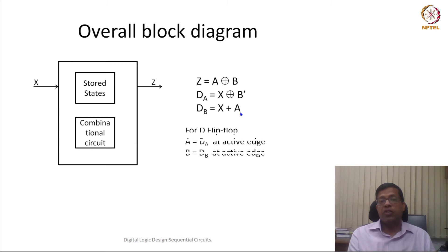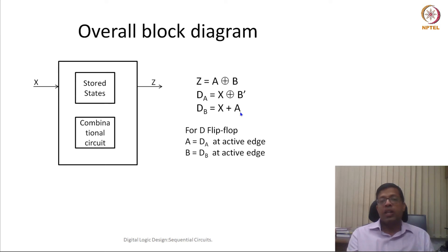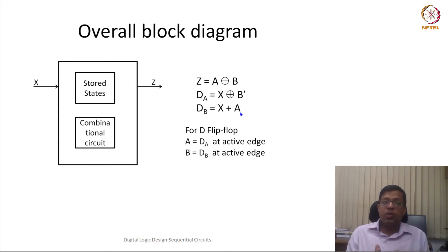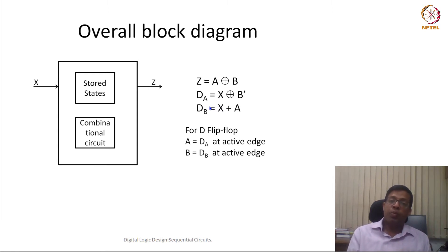We know that for a D flip flop, DA will become A whenever there is an active clock edge. Similarly, DB will become B at the active edge — the translation from DA to A and DB to B is straightforward for a D flip flop. To analyze the circuit, we can break it into a combinational circuit. Since A and B are the outputs of the flip flops, they are not going to change for one clock period. We can assume them as inputs to calculate the next state.